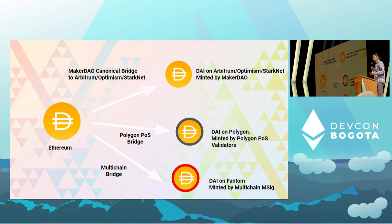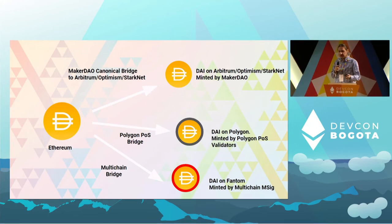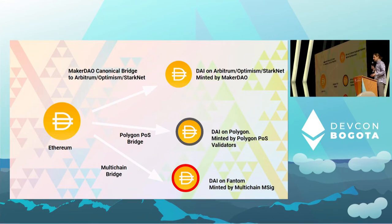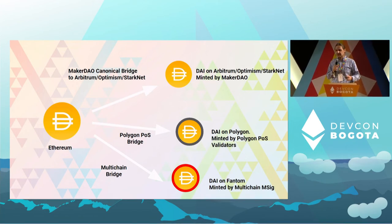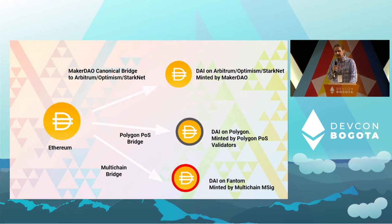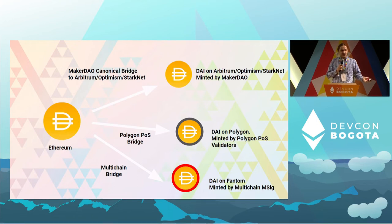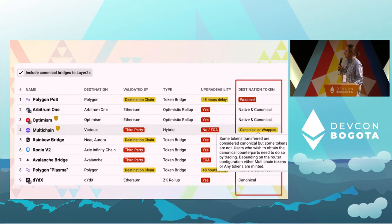Take DAI as an example. If you move DAI via the MakerDAO bridge to Arbitrum, Optimism, or StarkNet, your DAI will be essentially minted by MakerDAO contracts and it will have exactly the same properties as your DAI on the mainnet. But if you move DAI through the Polygon bridge, then your DAI on Polygon will be minted by Polygon validators, and they might actually have upgrade power over the DAI. And if you move DAI to Fantom, it will be minted by Multichain. So again, it's a question: how secure do you feel with your DAI in your wallet?